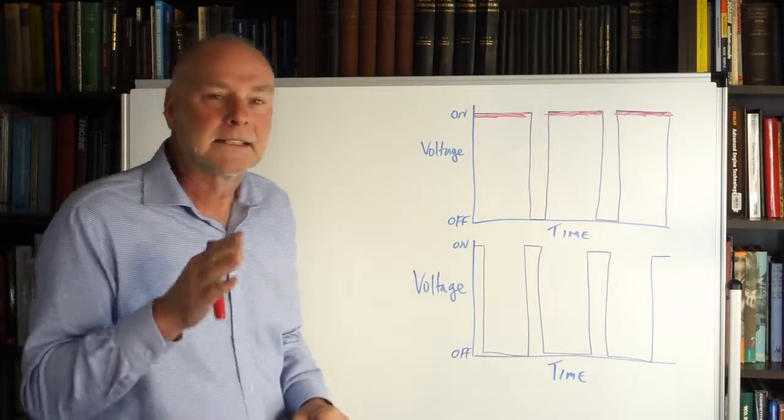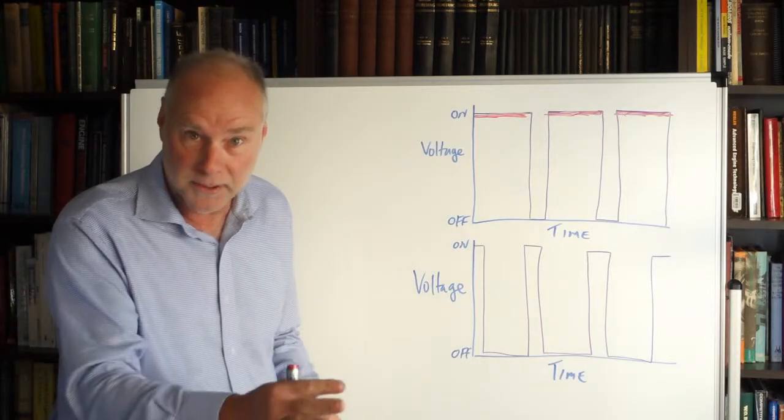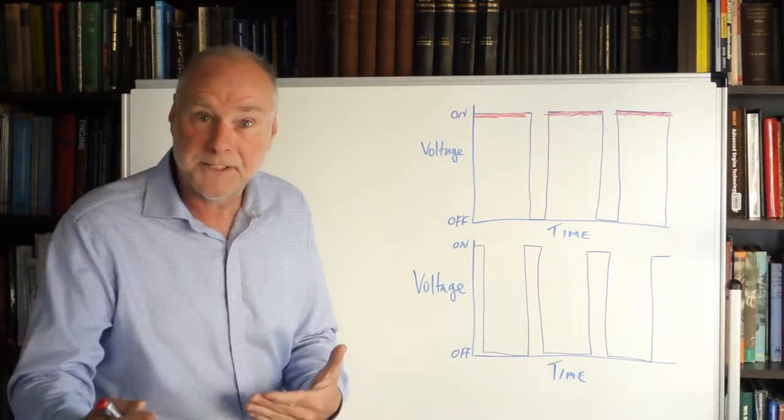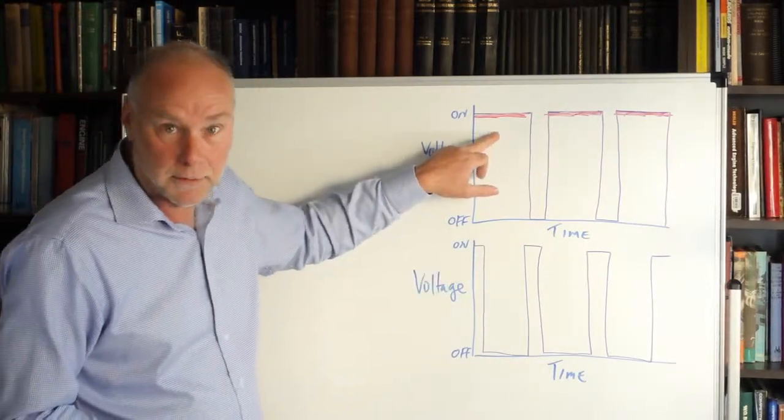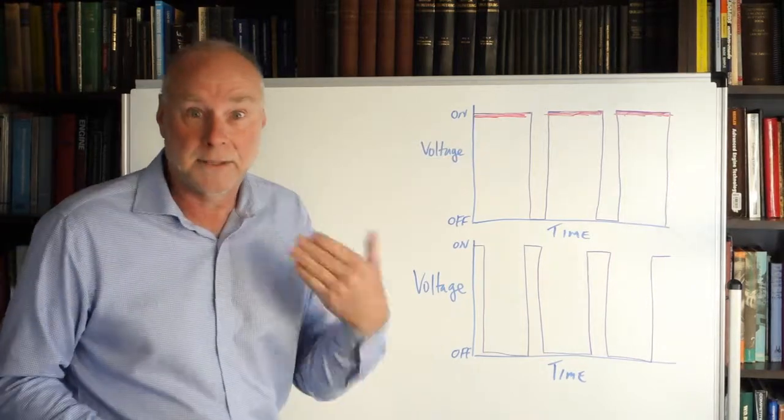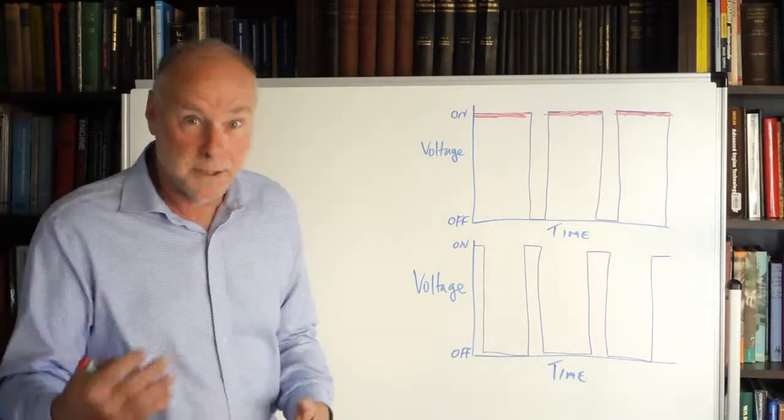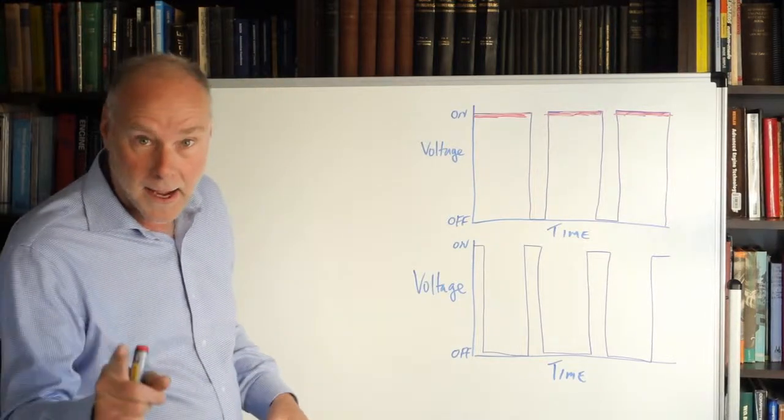What it means is that the device gets 80% of battery voltage. It doesn't get full battery voltage, it doesn't get zero, it gets 80%. If the duty cycle, how long it's on for, is 80%, that's what proportion of the battery voltage it gets. So our pump or fan's going to be going pretty fast.